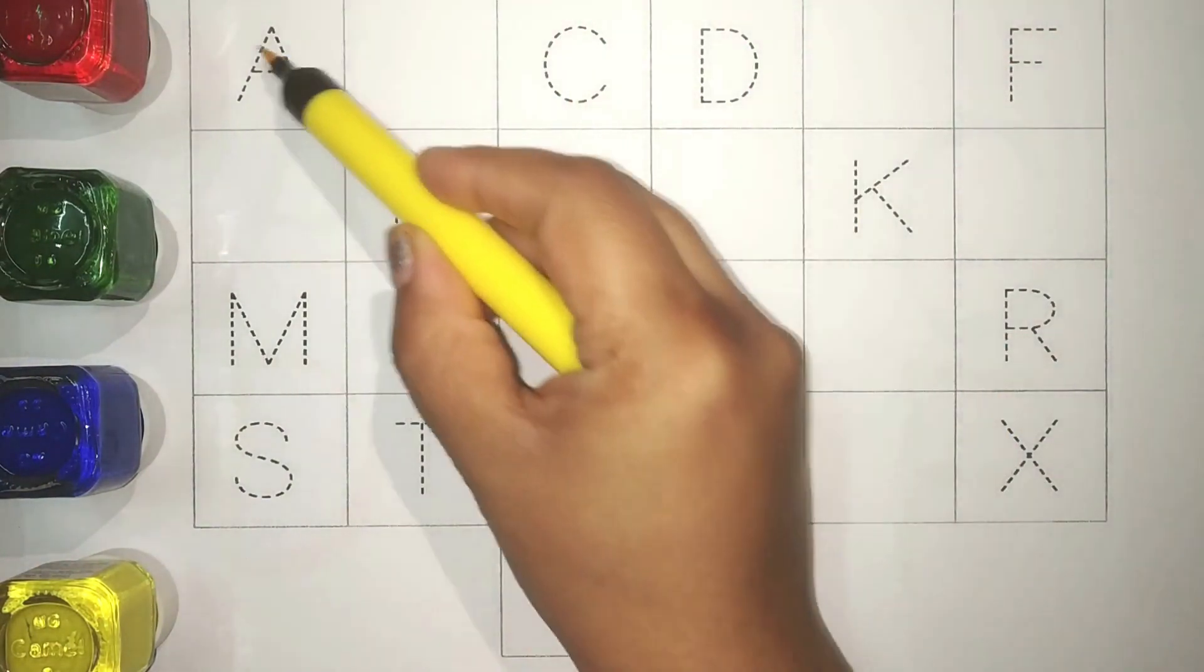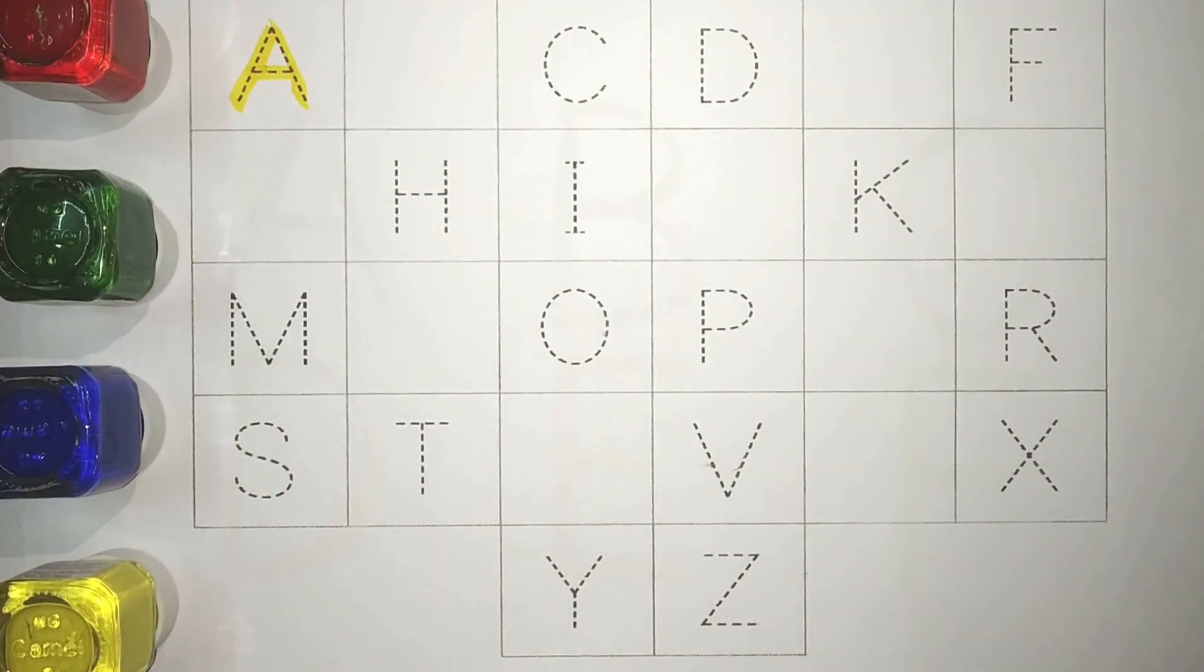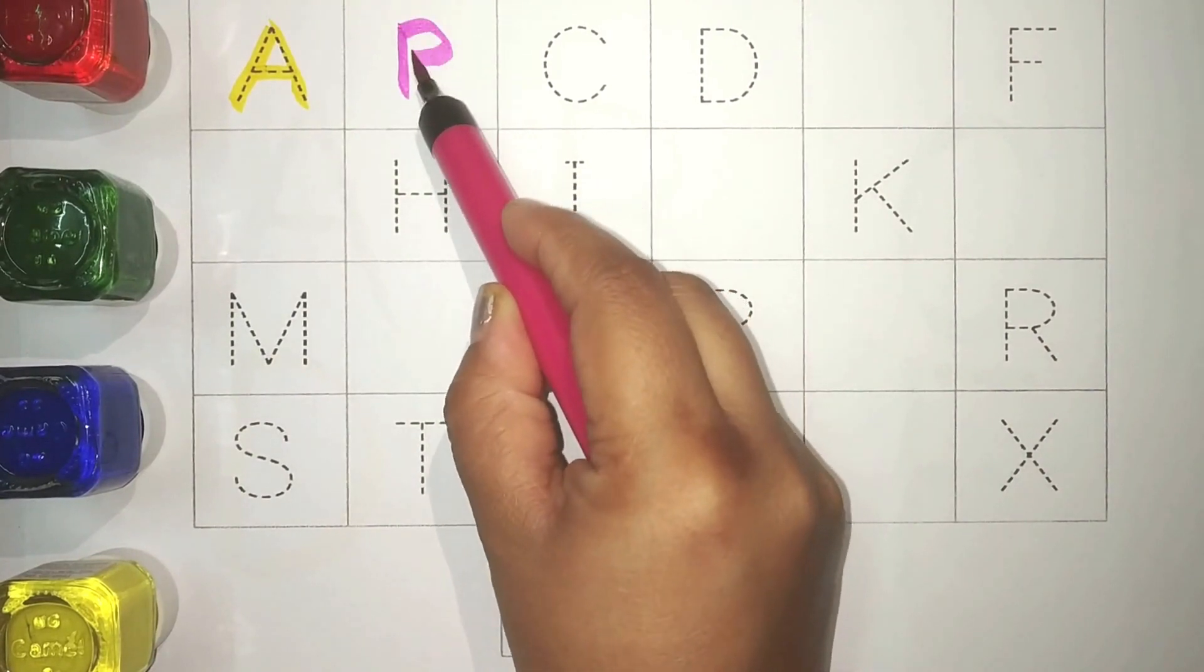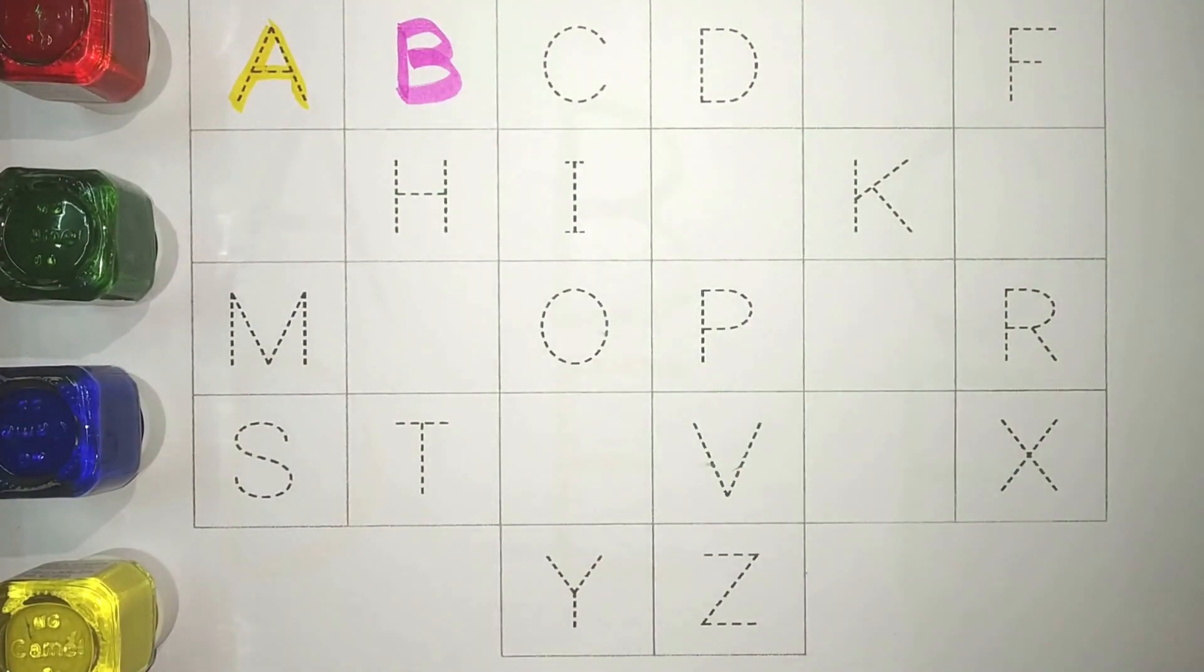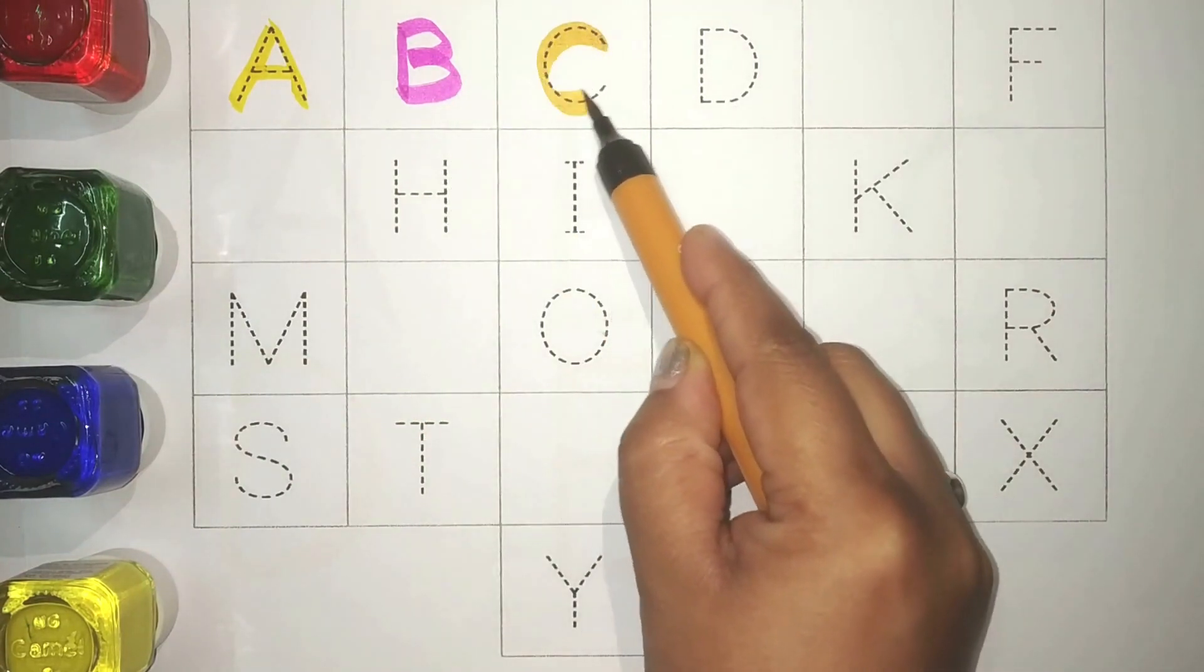Yellow, A, A for Ant. Pink, B, B for Bat. Mustard, C, C for Cat.